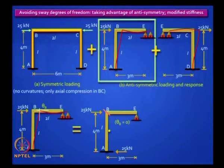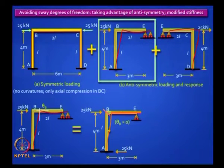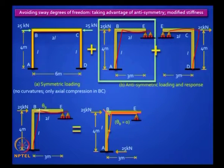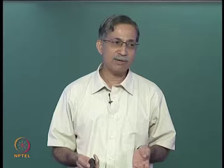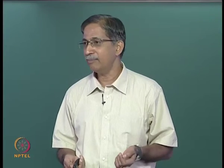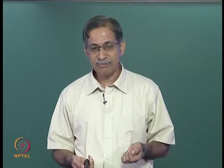The first step in the displacement method concept is to arrest theta_B, and when you do that and apply the load, you will get fixed end moments because that column is going to move. But it moves in a manner familiar to us: the beam B will behave like a rigid beam, it will just slide horizontally, and you will have moments in that column which you can easily calculate. The fixed end moments will be 25 into 2. The entire 25 kilo Newton will go to the fixed end A, nothing to the roller support E. The point of contraflexure is exactly at mid-height, and the moments at the two ends will be 25 into 2 = 50 kilo Newton meter. Will the moments be clockwise or anticlockwise?